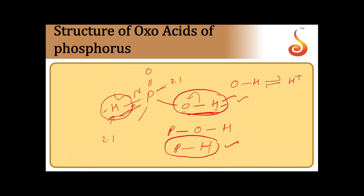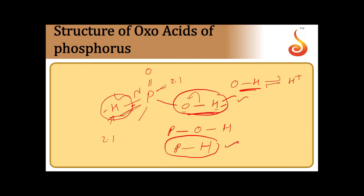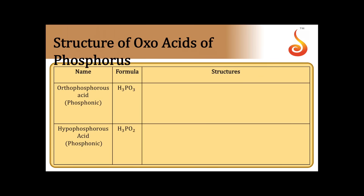To summarize: only those hydrogen atoms attached to oxygen — that is, in P-OH bonds — are ionizable and give H⁺ ions, contributing to basicity. P-H bonds in oxo acids are not ionizable and do not give H⁺ ions; hence these hydrogen atoms play no role in basicity and are responsible only for the reducing property of the oxo acids.